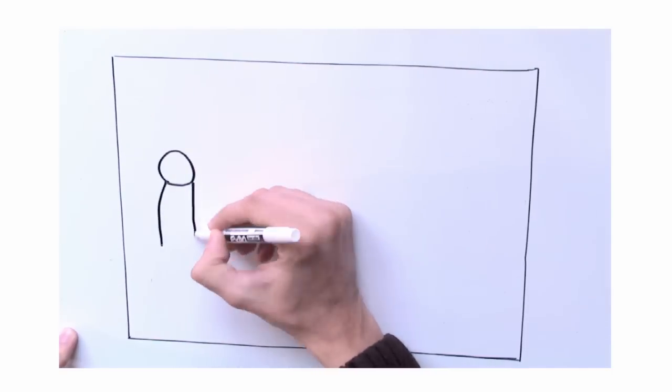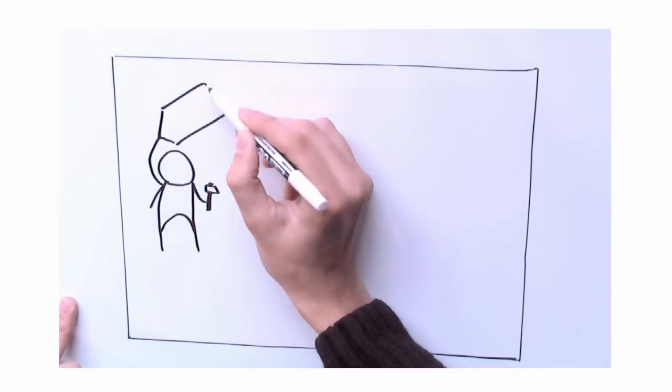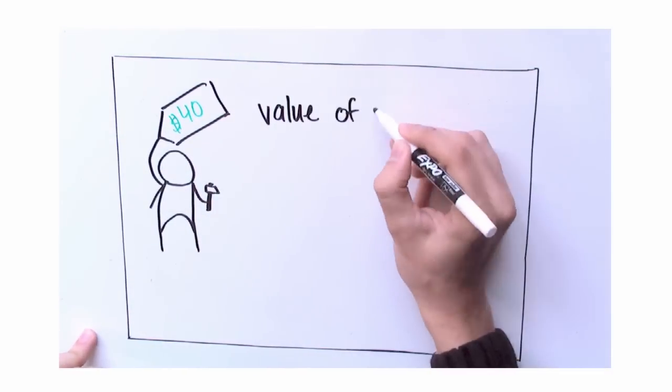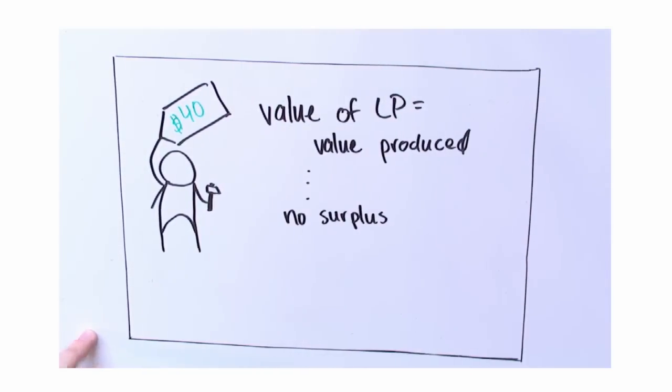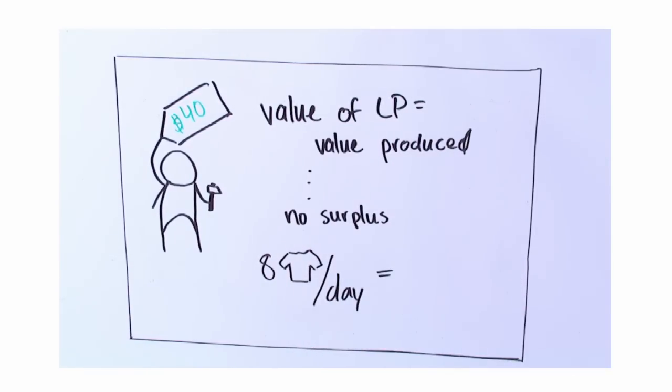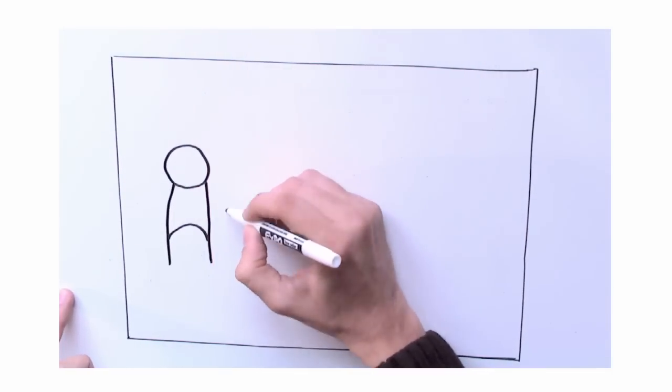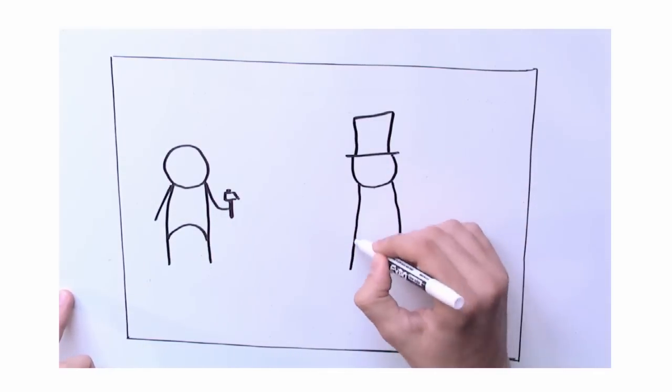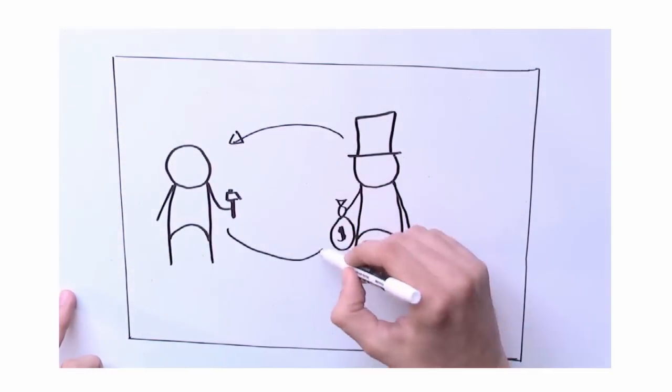If the value of labor power was the same as the value produced in the working day by the worker, then the capitalist would break even at the end of the day. Say it took $40 for the worker to live a sustainable life. If everything else stayed the same, the worker would produce 8 t-shirts in 8 hours, creating $40 of potential value for the capitalist. The problem for the capitalist is that $40 have already left the funds to pay the worker, and only $40 were made back, and that's assuming the capitalist was able to sell all the t-shirts on the market. The capitalist has made no money at all. If the capitalist doesn't do something, he or she will quickly go out of business.